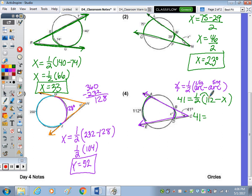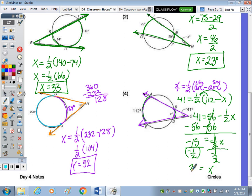So 41 equals distributing half of 112. Well, half of 100 is 50. Half of 12 is 6. So 56 minus 1 half X. Subtract the 56. 41 minus 56 would be a negative 15. Divide by negative 1 half. Make sure you put that in parentheses and use in the calculator. We end up with X equals 30.